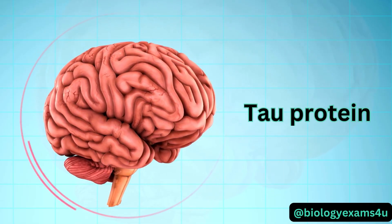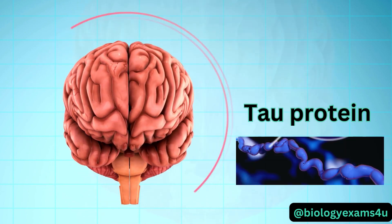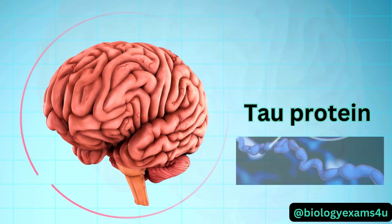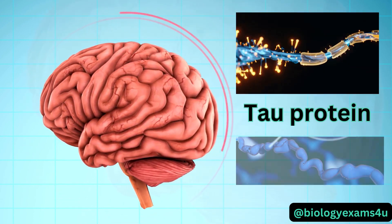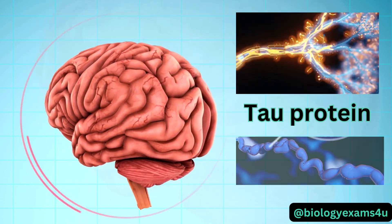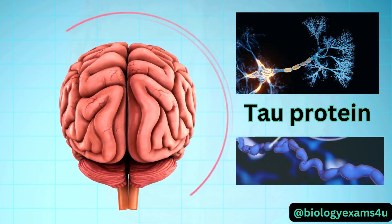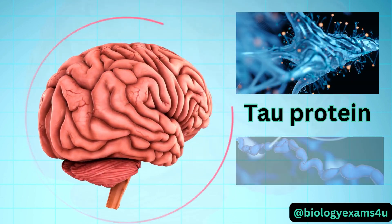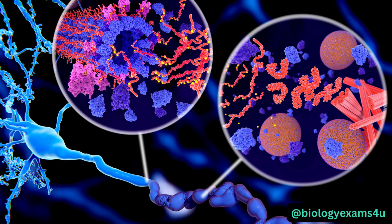The other protein is called tau, deposits of which form tangles within brain cells. Tau acts as a key component of a neuron's cytoskeleton, which is similar to the bones in our bodies — it gives neurons their shape and helps them carry out their jobs. Tau is very sensitive to changes in the brain. Changes such as amyloid buildup can cause tau to become damaged and a neuron's cytoskeleton to fall apart.